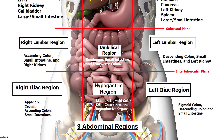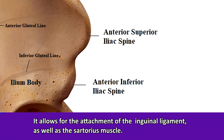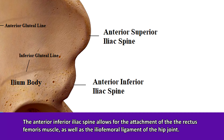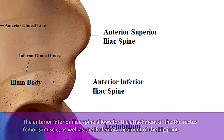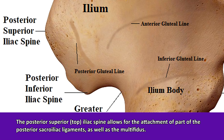When looking at the anterior or front side of the ilium, you'll notice it comes to two points or spines. The superior spine is called the anterior superior iliac spine and it allows for the attachment of the inguinal ligament as well as the sartorius muscle. The anterior inferior iliac spine allows for the attachment of the rectus femoris muscle as well as the iliofemoral ligament of the hip joint. On the posterior or back of the ilium, we also have two more spines: the posterior superior iliac spine, which allows for the attachment of part of the posterior sacroiliac ligaments.